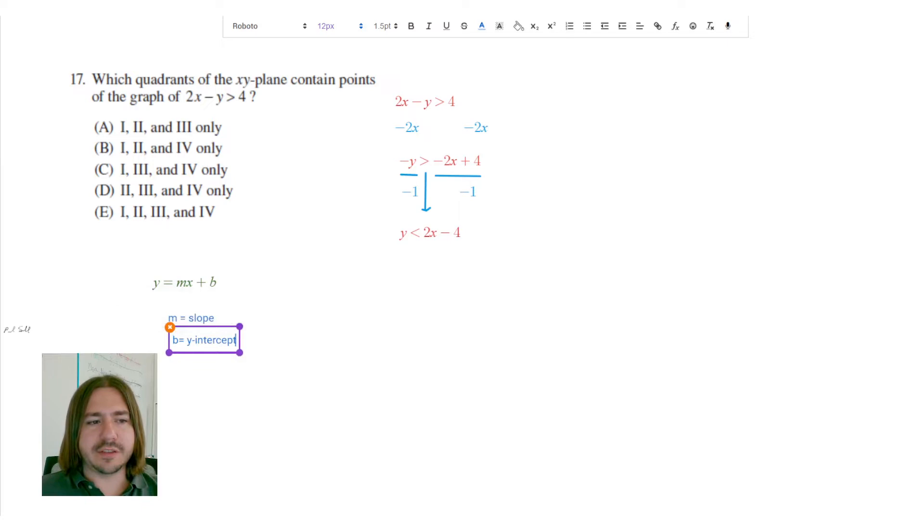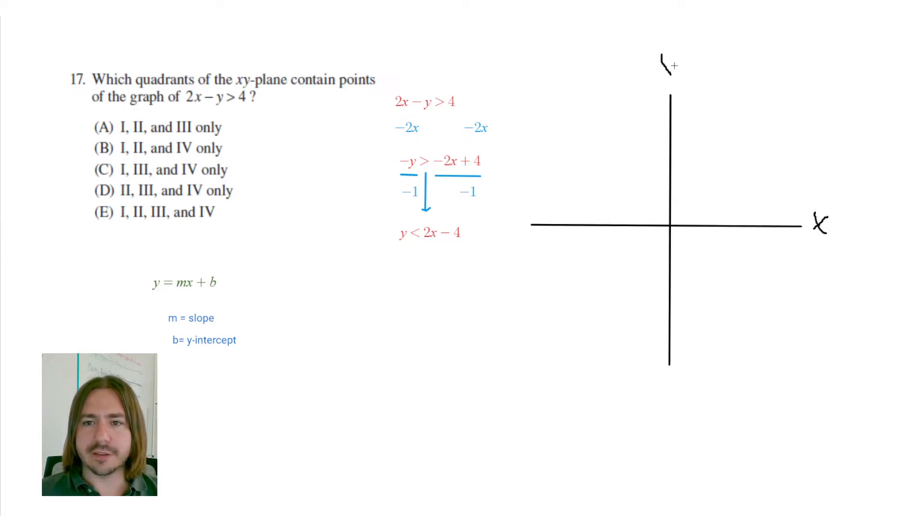So in this case, our slope is 2 and our y-intercept is negative 4. Now, I don't have a grid here to plot any of this, so I'm just going to have to do a rough sketch and hope that it's really obvious where the solutions are going to be. So let's go ahead and sketch an x and y-axis here. Here's my x-axis. Here's my y-axis.